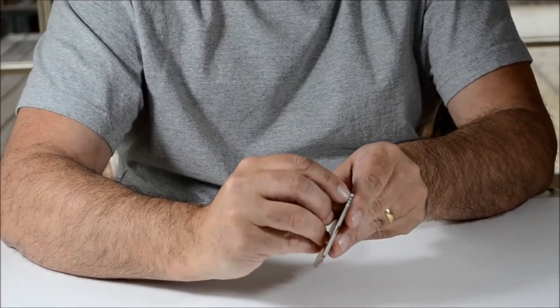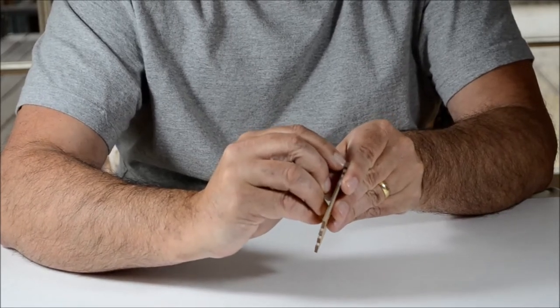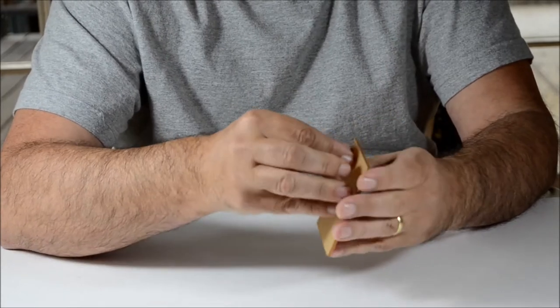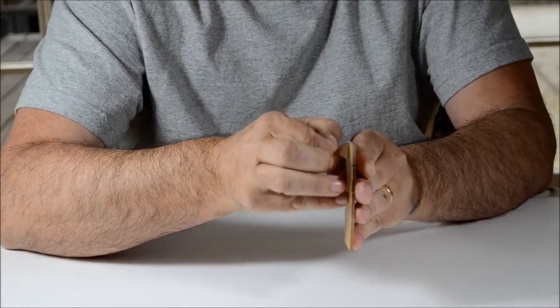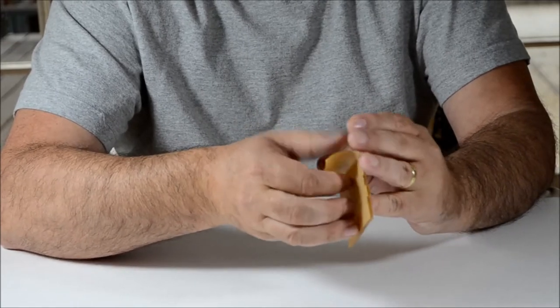So what you do is start off on one of these edges, corner piece parts, and you just start lifting this film off. Once you get it started it peels off pretty easily.